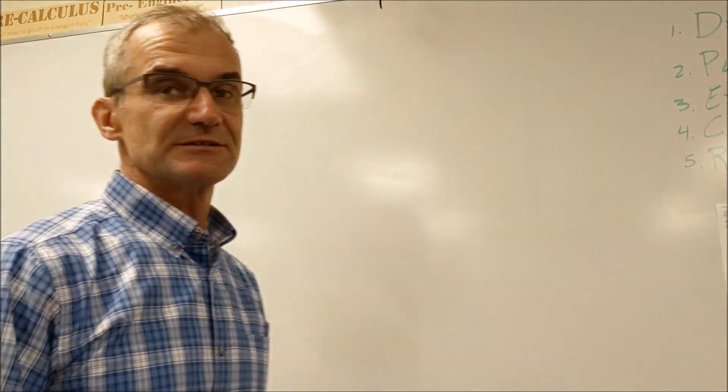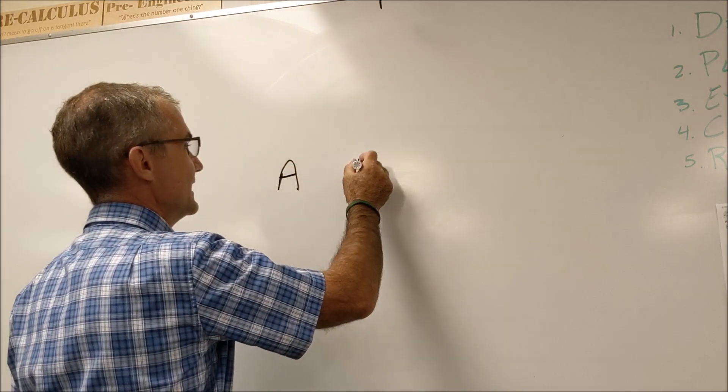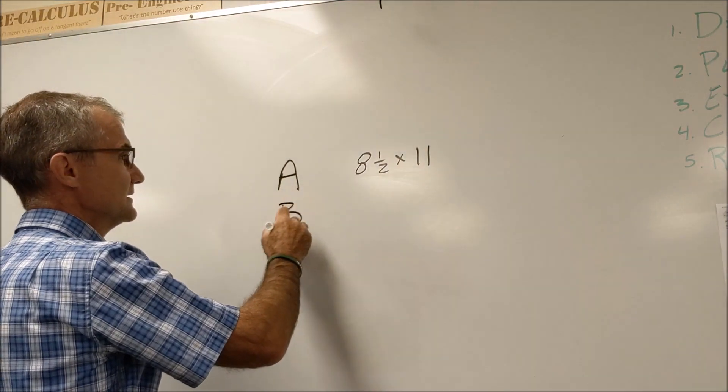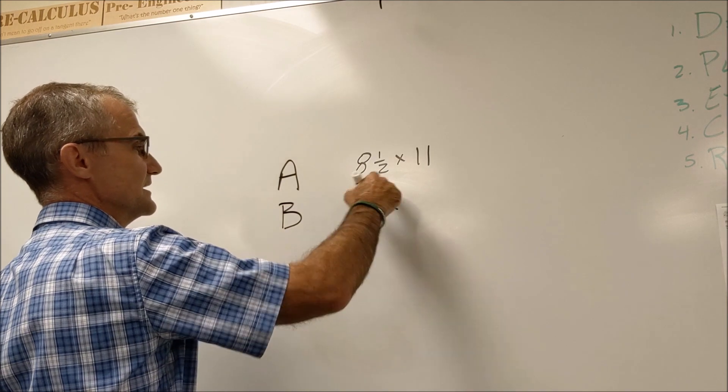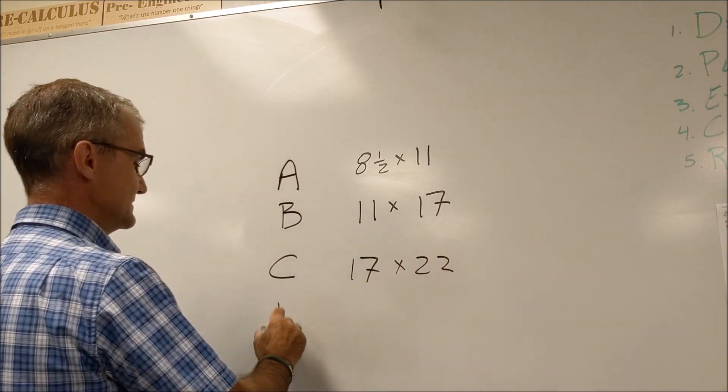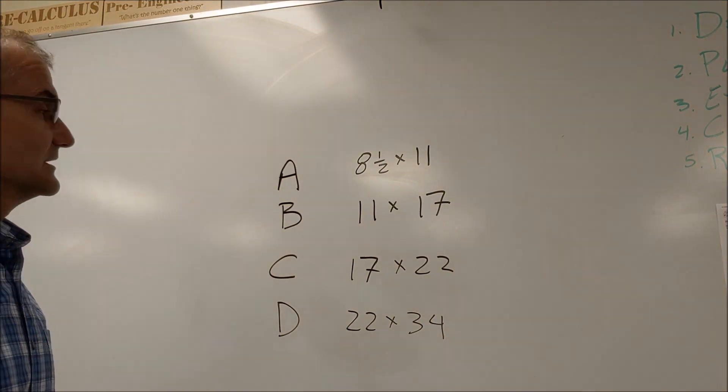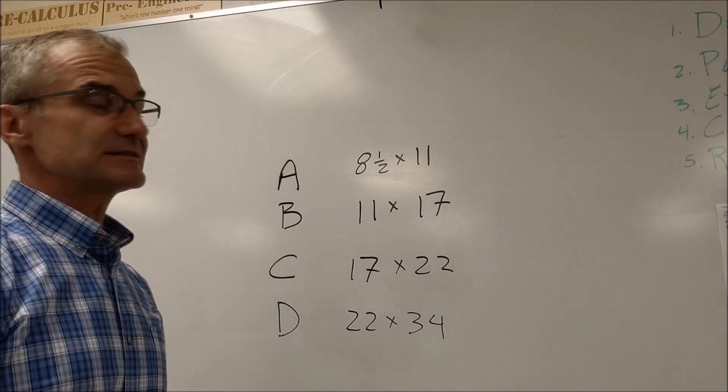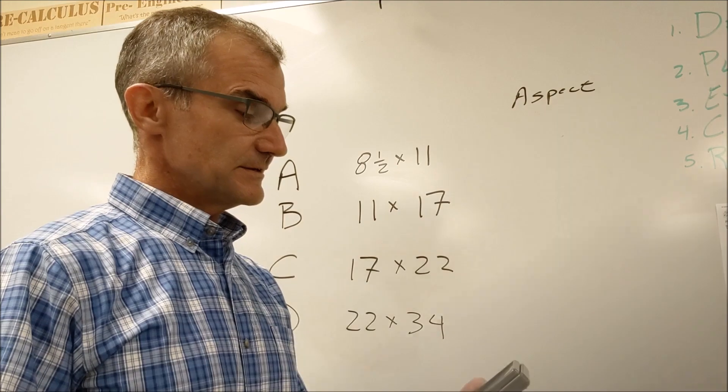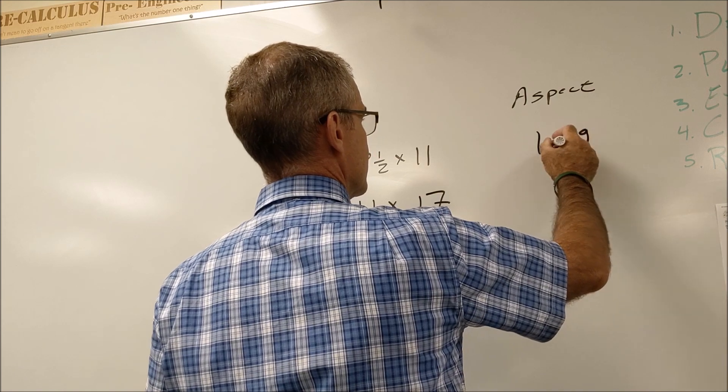So we're going to just talk about paper sizes in the US. How paper sizes work in the US is A size paper is eight and a half by eleven, and then you just keep doubling that sheet of paper. So B is eleven by twice that, seventeen. C is seventeen by twice that, twenty-two. And D is twenty-two by thirty-four. E is thirty-four by forty-four. So the next thing we can figure out from that is the aspect ratio where we divide the length by the width. So I do eleven divided by eight and a half to get one point two nine, so that's the aspect ratio.